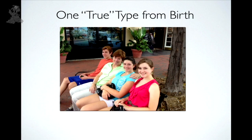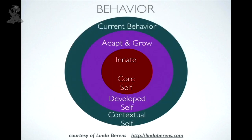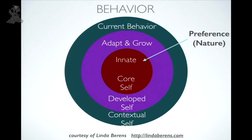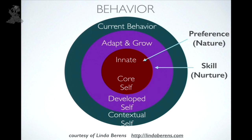Most personality theories hold that you have one personality type you were essentially born with, though you grow and change. Researcher Linda Barron's model offers three layers: the innate core self (nature), the developed self (nurture — how you adapt and learn), and the contextual self (day-to-day behavior). When studying personality, researchers are typically trying to understand that innermost layer — who you fundamentally are.